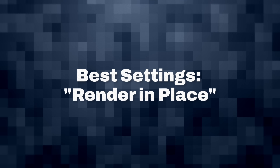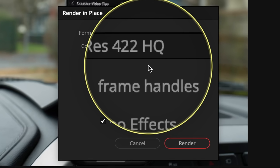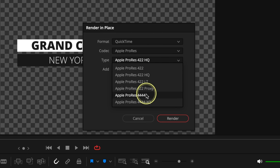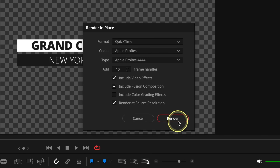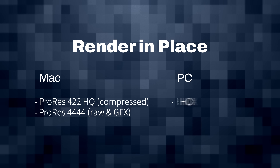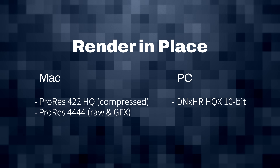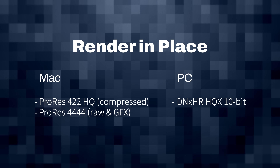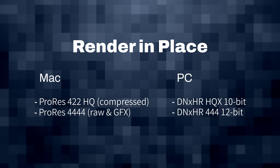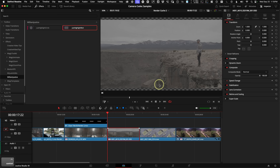For render in place best codec settings on a Mac, I would always use ProRes HQ for prosumer footage like stuff from a Sony FX3, or ProRes 444 for raw footage or graphics that still need transparency. On a Windows computer, those would be DNxHR HQX 10-bit for prosumer footage, and for raw footage and graphics, use DNxHR 444 12-bit, and you should be good.